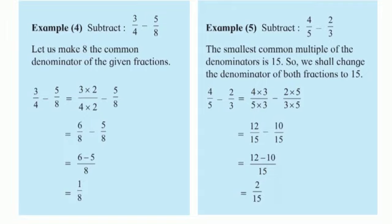In this way you solve subtraction of unlike fractions. Now the fifth one: subtract 4 upon 5 minus 2 upon 3. Here again the denominators are not the same, so you have to convert them into equivalent fractions. The smallest common multiple of the denominators is 15, so we shall change the denominator of both fractions to 15 by doing cross multiplication.